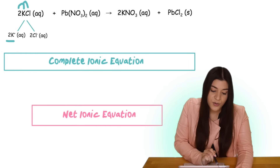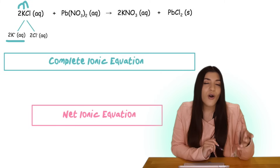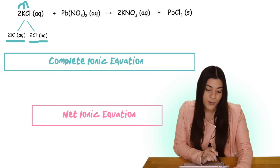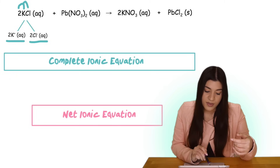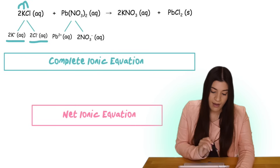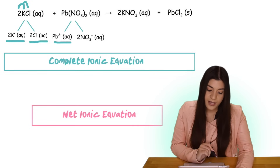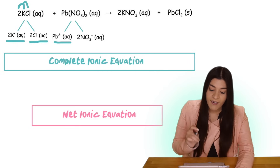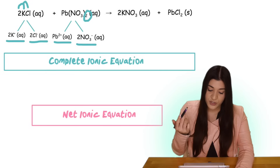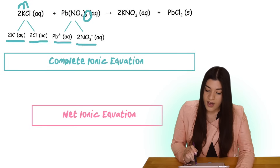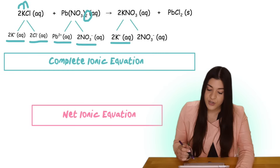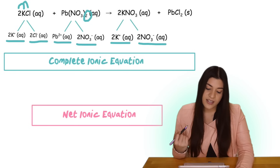We have two potassiums with a plus one charge, aqueous, and two chlorines with a negative one charge, also aqueous. Moving to our second reactant, we have lead with a two plus charge, aqueous, and two NO3 nitrates with a negative one charge, aqueous — because of the two subscript. For the products, two potassiums with a positive charge, aqueous, and two nitrates with a negative charge, aqueous.